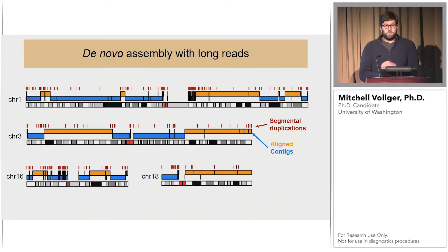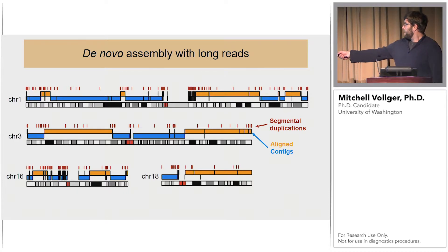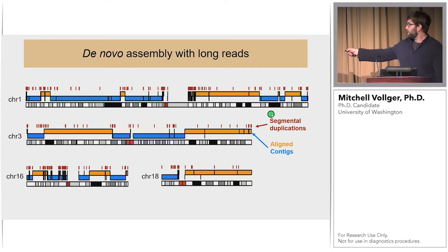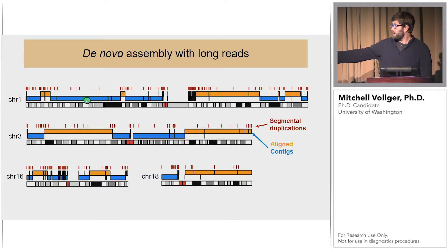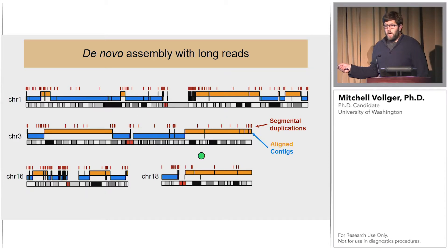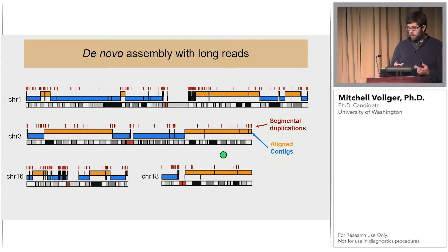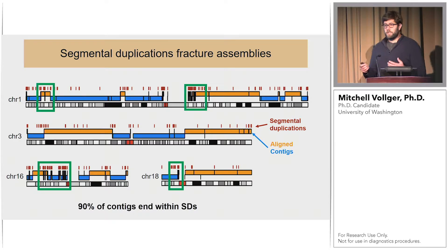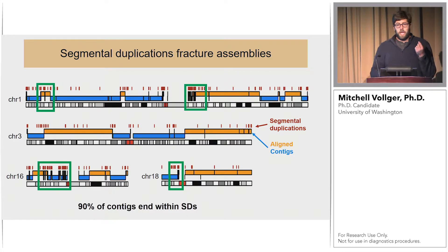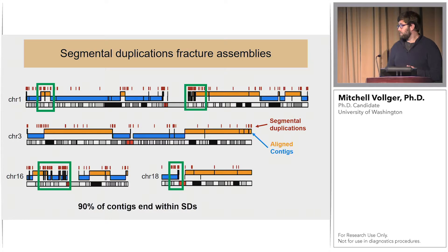To study segmental duplications, we do long-read de novo assemblies. Here I'm showing in orange and blue the contigs of a de novo assembly aligned to the human reference in this karyoplot, with segmental duplications highlighted in red. We can resolve many segmental duplications using long-read technologies; however, 90 percent of our contigs in a human genome assembly end in a segmental duplication — so they're clearly still very problematic for assembly.